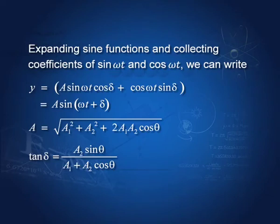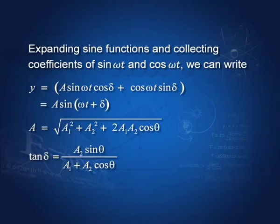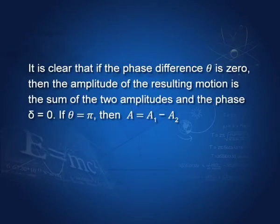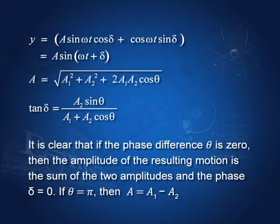The phase of the resultant is given by tan δ = (a2·sinθ)/(a1 + a2·cosθ), where θ is the initial phase difference. If θ = π, then cosθ = −1 and sinθ = 0, so δ = 0 and A = √(a1² + a2² − 2a1a2) = |a1 − a2|. Therefore, if two SHMs have a phase difference of π, the amplitude of the composite oscillation is simply the difference of the two individual amplitudes.